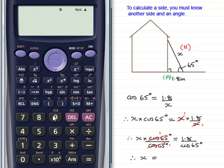So, we just need to do then 1.8, so 1.8 divided by the cosine, cos for short, of 65 degrees. 65, close off the bracket and press equals.